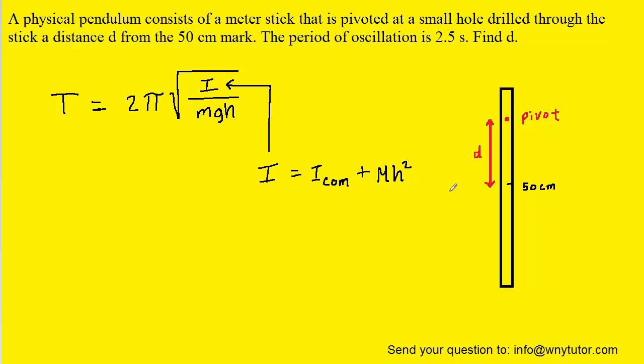Now h is the distance from the center of mass to the pivot, and we can see from the picture that that distance from the center of mass to the pivot is actually d, so we can replace h with the value d.